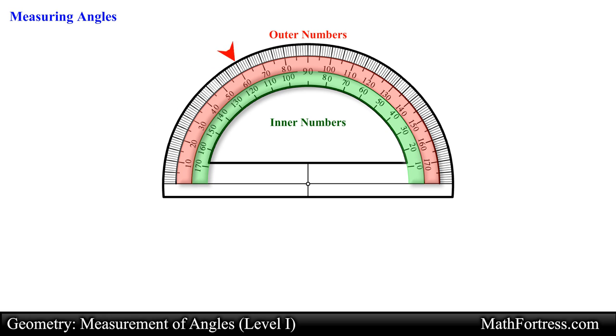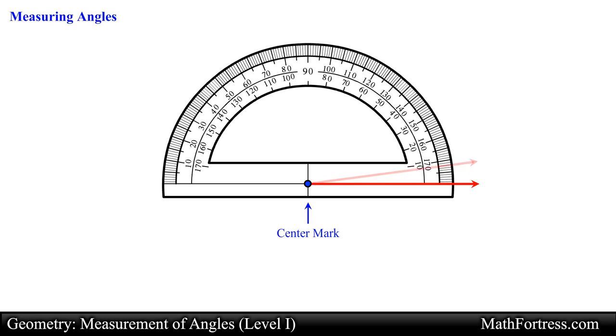We measure angles by placing the center mark of the protractor on the vertex of the angle and we align one ray or segment of the angle with the 0 degree mark at either side.